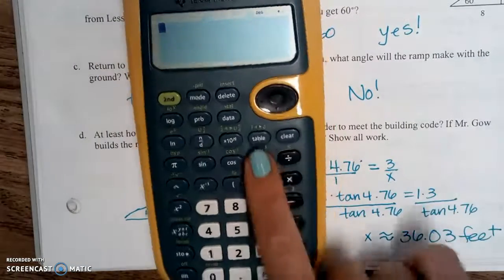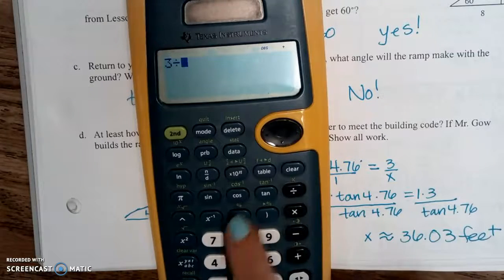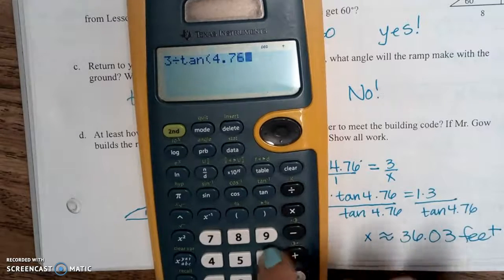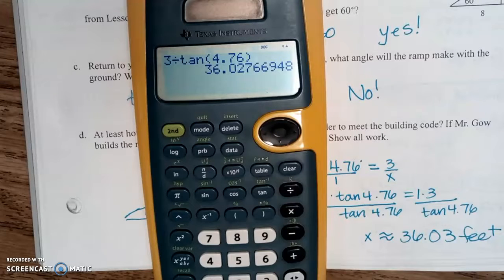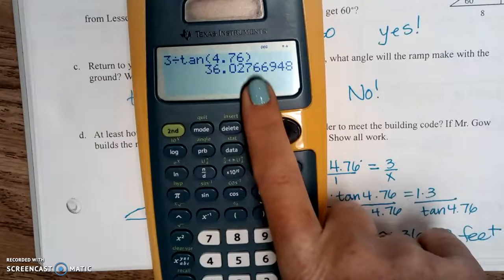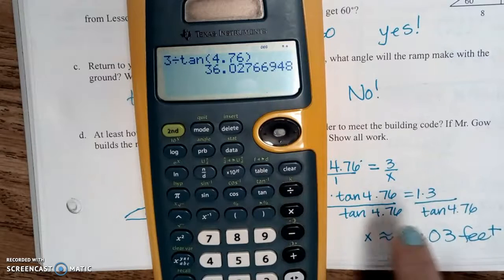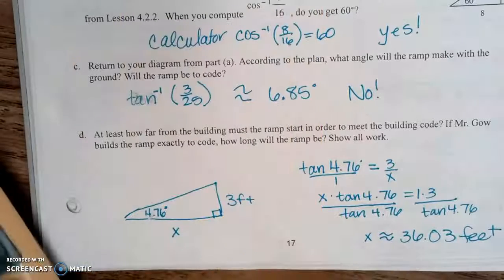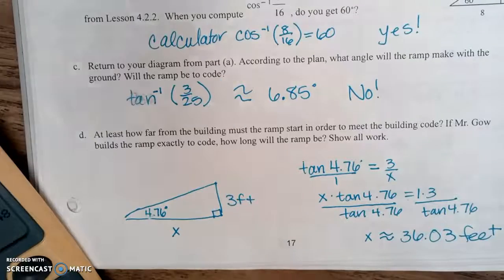So let's type that in the calculator. Let me clear that one out. 3 divided by the tangent of 4.76. 36.02. So if we're going to round this, we have 36.02. But next to that 2 is a 7. So we're going to round up to a 3. So instead of having 25 feet, it has to start 36 feet away, that ramp. Then the wheelchair can go up smoothly and go down smoothly without going flying.